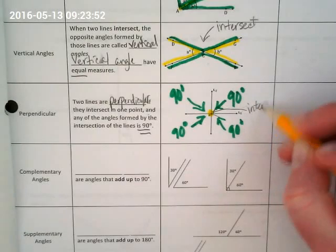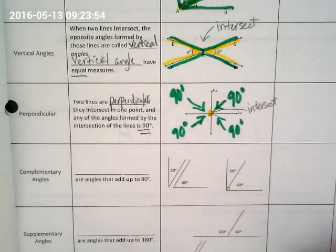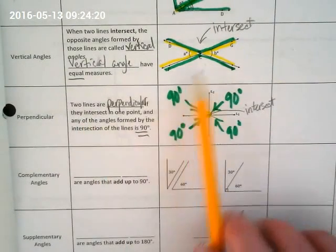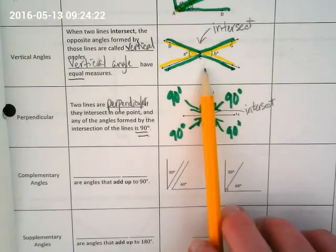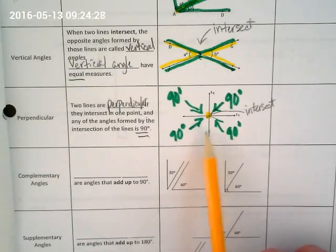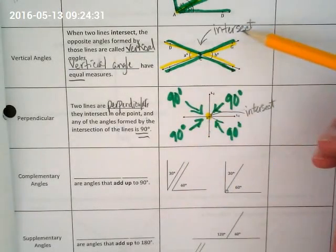So it also has an intersection. We have a saying in math that all squares are rectangles but not all rectangles are squares. Because a rectangle is a shape with 90 degree angles and four sides. Right? But a square is a special rectangle because all of its sides are the same. Well, perpendicular is also vertical. This is just a special vertical. Just like a square is a special rectangle.